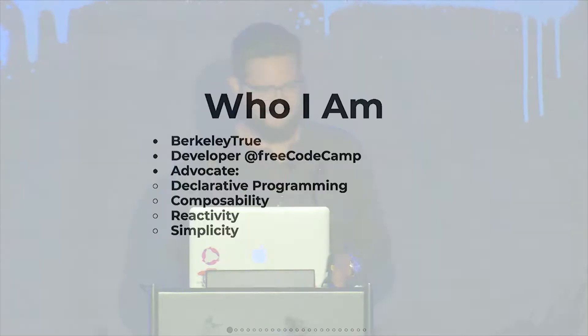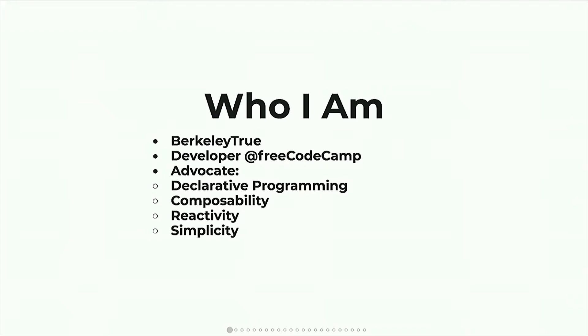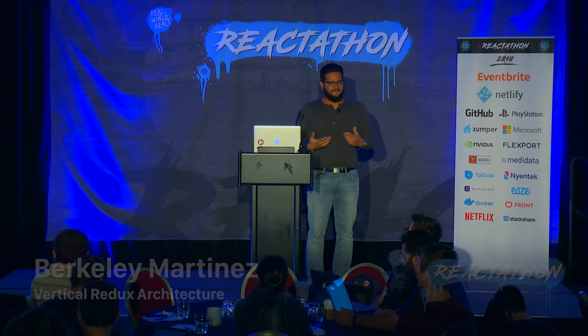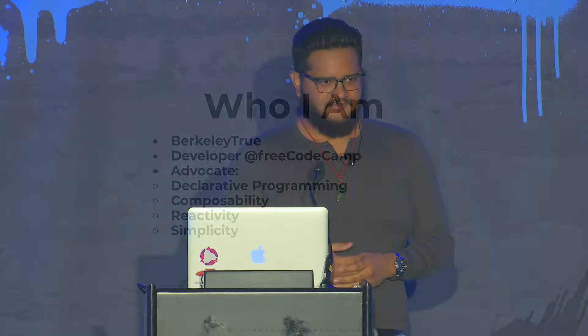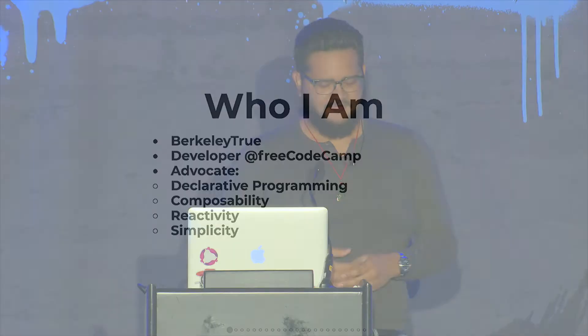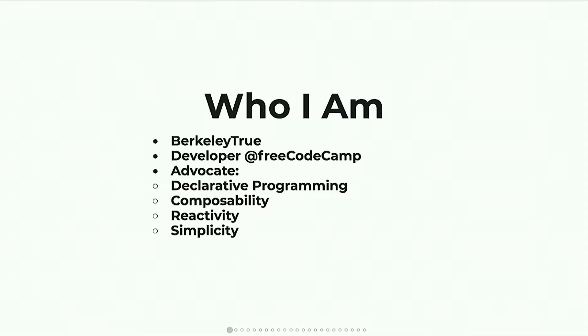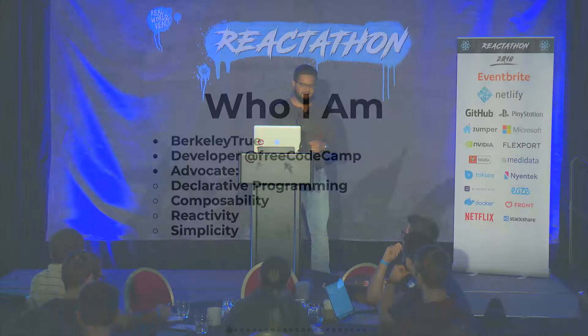I like to talk about the things I'm really, really excited about in the developer world. And the things that they boil down to are essentially these four things: declarative programming, composability, reactivity, and simplicity. I think these are things that are kind of making a renaissance now, but we don't see enough of them, and there's a lot of confusion around these simple ideas. I apply these principles to how I write code every day.